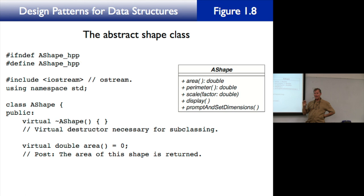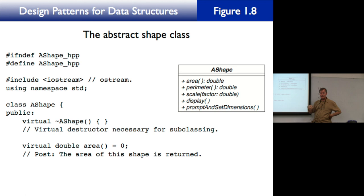Display prints out a display as a side effect and doesn't return anything. PromptAndSetDimensions is for the main program to ask the user to enter dimensions, and every shape is going to have to implement each one of these operations.